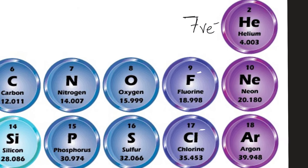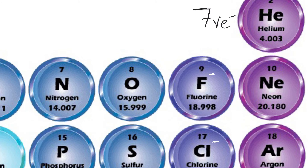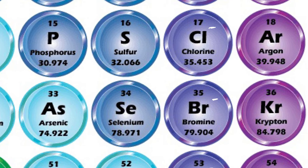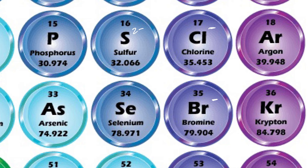The oxygen group has six valence electrons, so for the most part they gain two more electrons and have a negative-two charge: oxygen is negative-two, sulfur is negative-two, and selenium is negative-two.